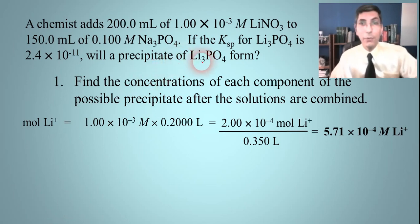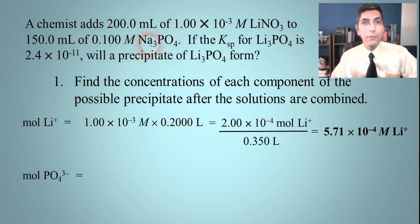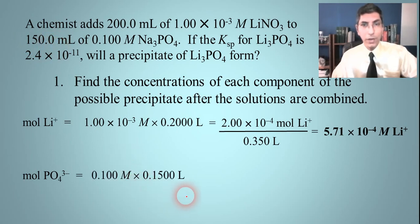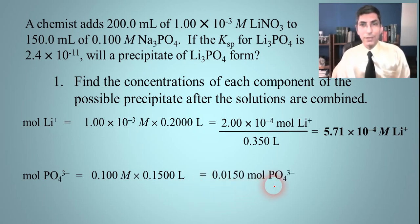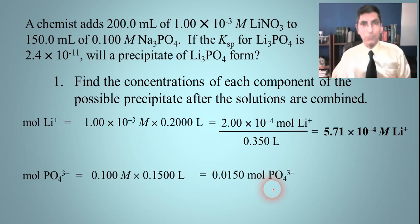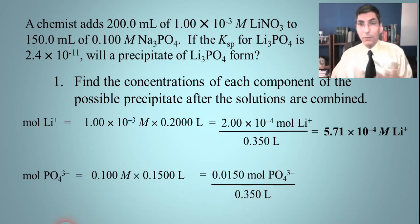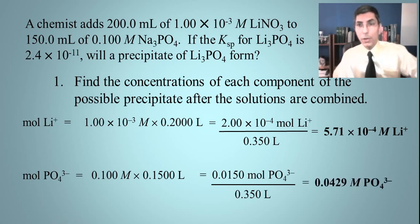Now for phosphate: moles of phosphate equals 0.1 molar times 0.150 liters, which gives 0.015 moles of phosphate. To find the molarity, we divide by the total volume, which is still 0.350 liters. So the new molarity of phosphate after the solutions have been mixed is 0.015 divided by 0.350, which equals 0.0429 moles per liter of phosphate.